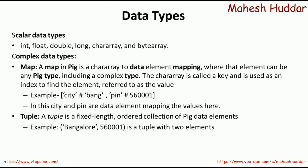The second complex data type is a tuple. A tuple is a fixed-length ordered collection of Pig data elements. The length is fixed — once it is defined, we cannot alter it. It is an ordered collection of Pig data elements, which may be scalar or complex. In this case, it is a tuple with two elements, and each of these elements are separated by a comma. This is how we can create tuples.